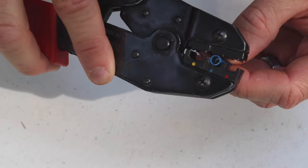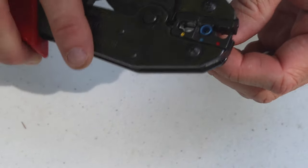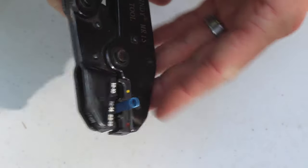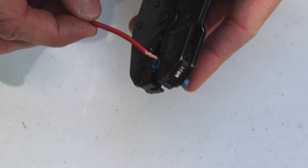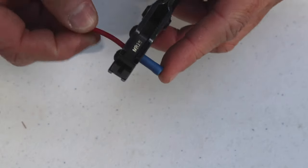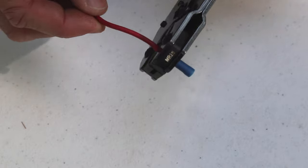Stick it inside your crimpers so it's flush with the end just like we did last time and just do one click just enough to hold it in place. You want to insert your wire and while holding the wire complete your crimp.